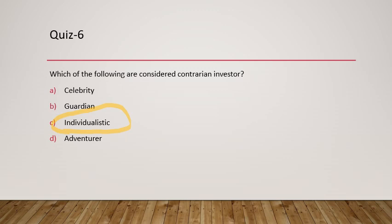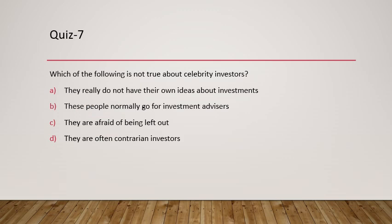Question seven asks: which of the following is not true about celebrity investors? The statements are: they really do not have their own ideas about investments; they normally go for investment advisors; they are afraid of being left out; and they are often contrarian investors. This last statement is not true. So the answer here would be D.